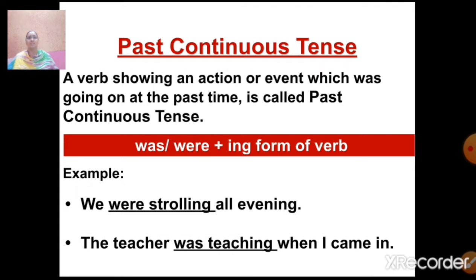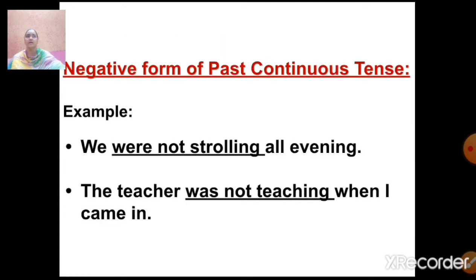The next sentence is: 'The teacher was teaching when I came in.' Here the subject 'the teacher' is singular, so we use 'was' plus ING form of verb, that is 'teaching'. Now let us form the negative form of past continuous tense — it is very simple. You just need to add 'not' with the helping verb: 'We were not strolling all evening.' 'The teacher was not teaching when I came in.'